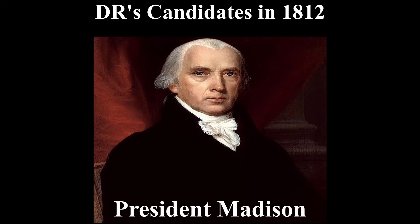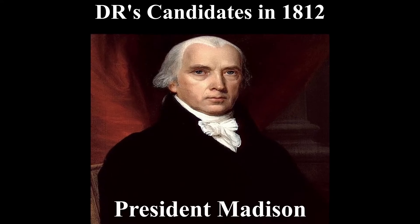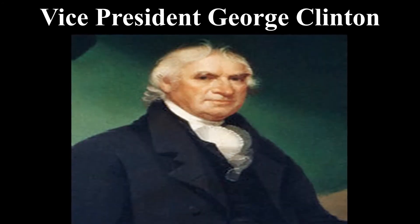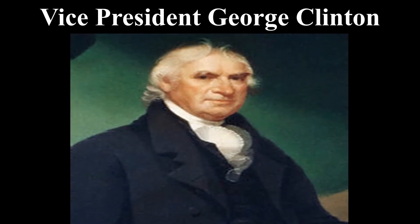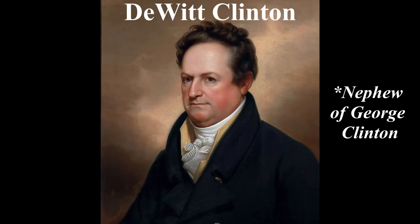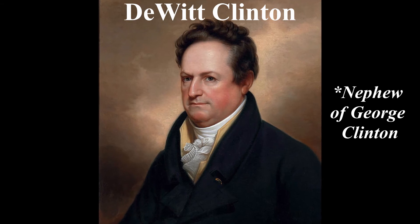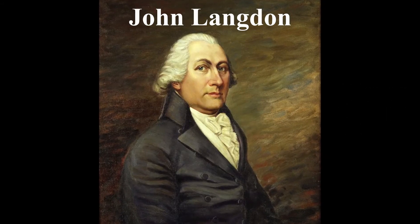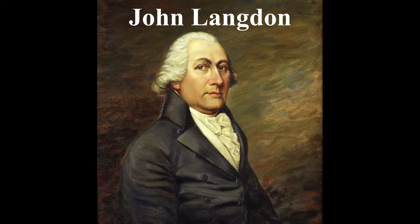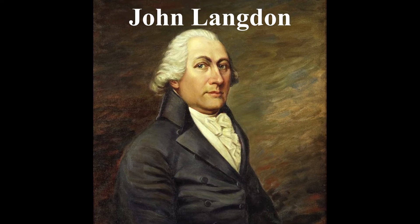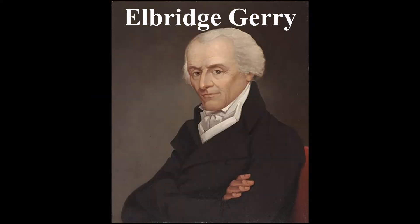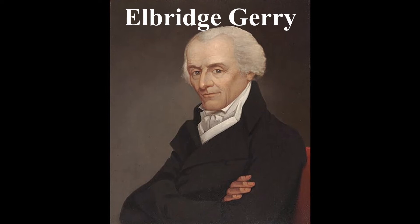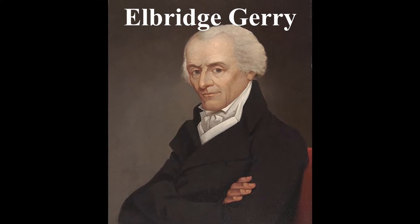For the election, Democratic Republicans had a couple of nominees. The first nominee for president was James Madison. Another was Vice President George Clinton, and New York politician DeWitt, nephew of George Clinton. Four people mainly ran to be Vice President: John Langdon, New Hampshire Governor, and Elbridge Gerry, Governor of Massachusetts.